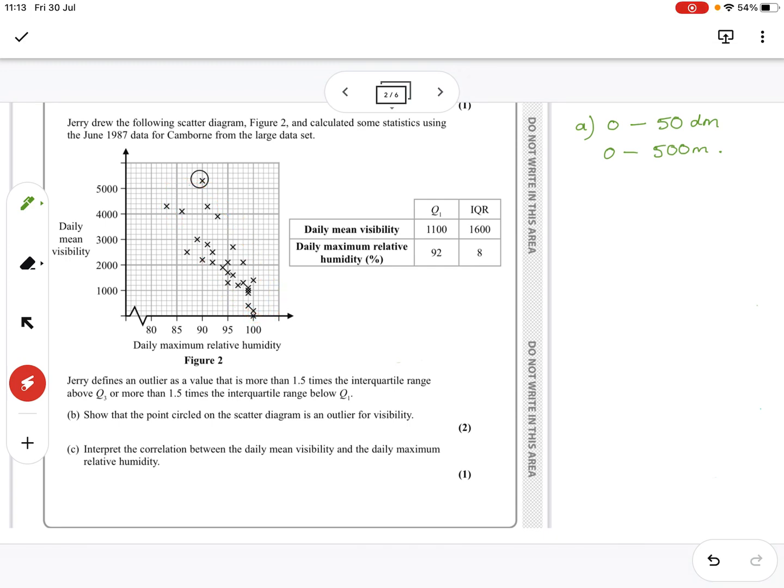Jerry defines an outlier as a value more than 1.5 times the interquartile range above Q3 and 1.5 below Q1. Show that the circle in the scattergram is an outlier for visibility.